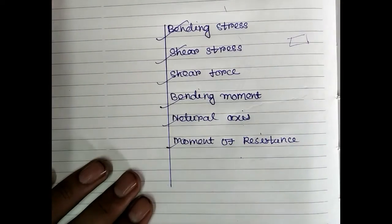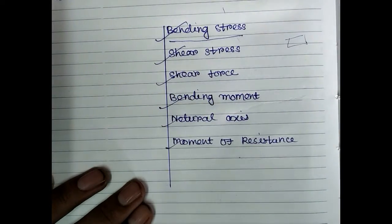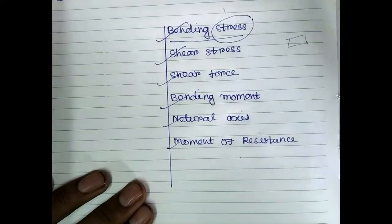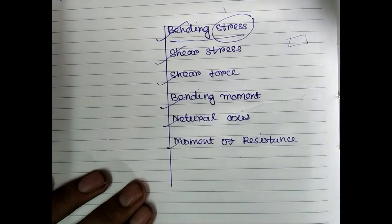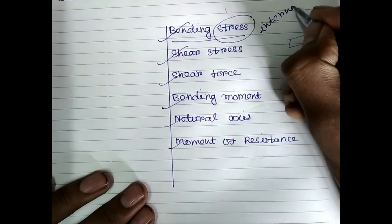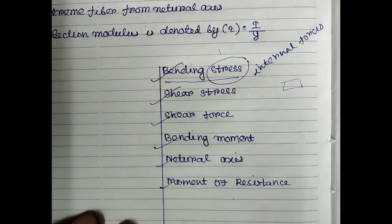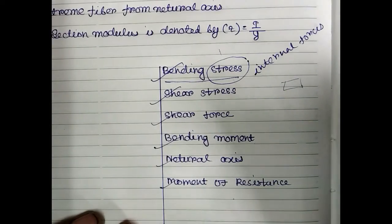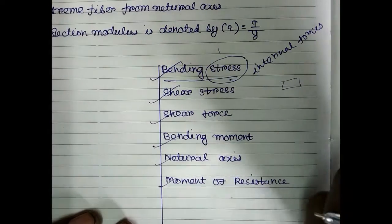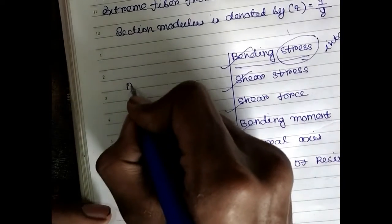Now let's understand what is bending stress. But before that, let's understand what is stress. When we apply external forces on a beam, there are some internal forces which resist the applied external force — that resistance is known as stress. So what is bending stress? When we apply a bending moment, the stress generated in the beam to resist that bending moment is called bending stress.